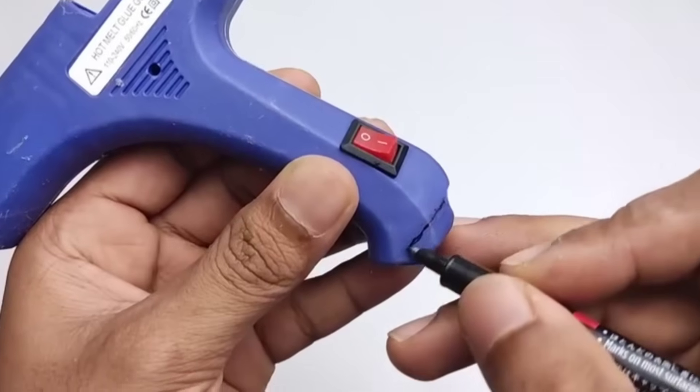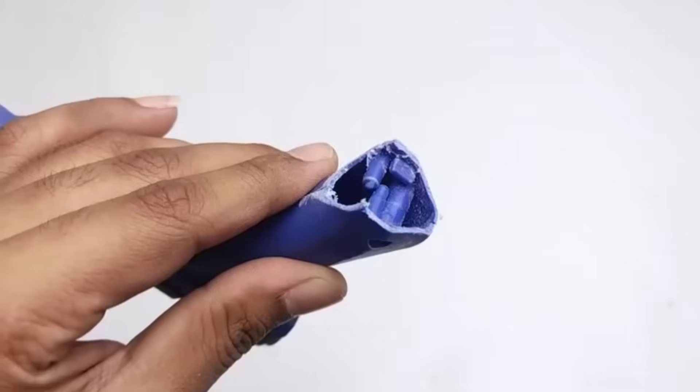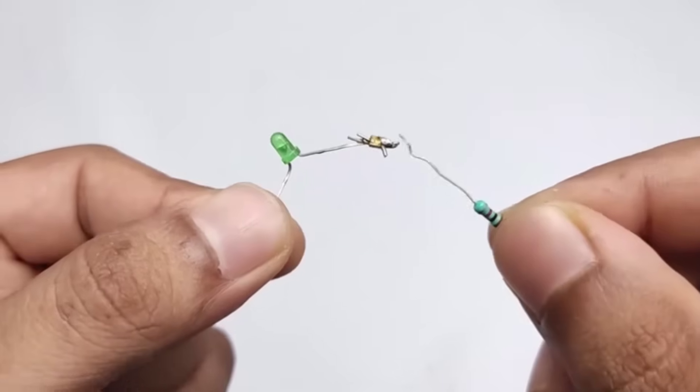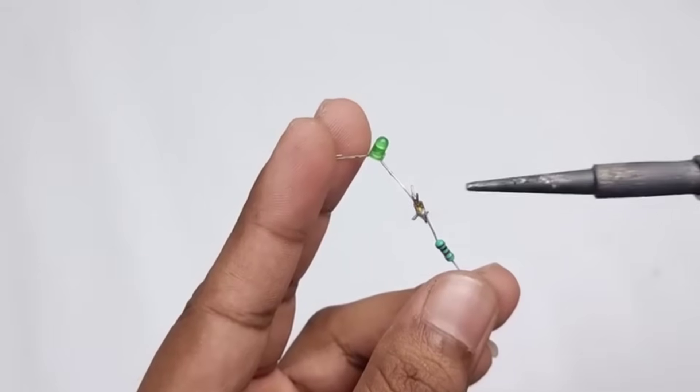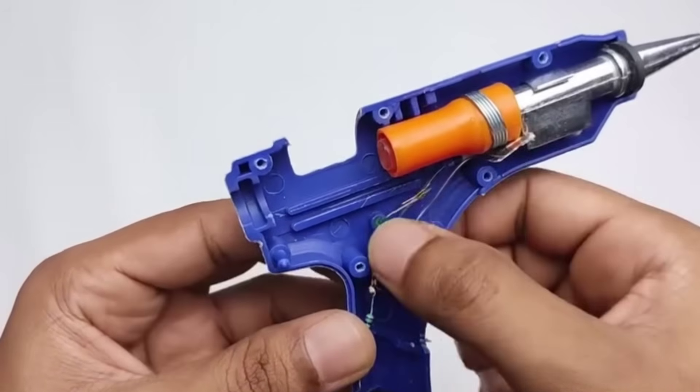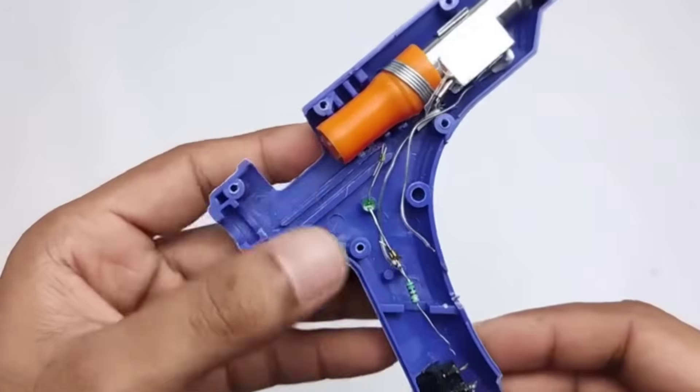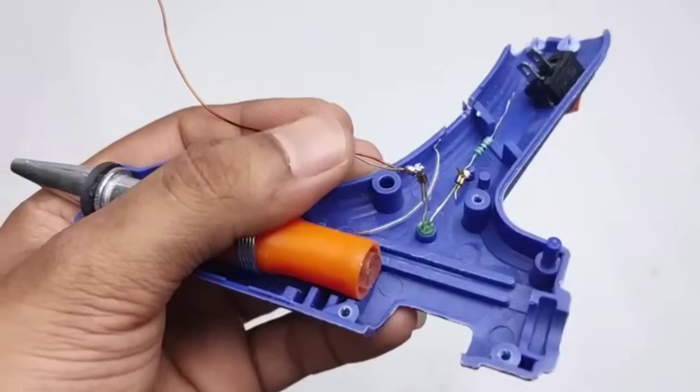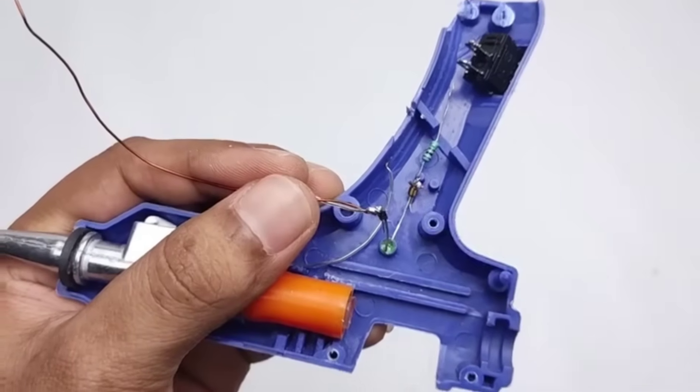So friends, we first mark the area with a marker and then carefully cut it using a saw for precision. We've finished cutting and now it's time to fix the nozzle in place. Next, we need to connect an LED light and a resistor into the circuit. We've connected all the wires and now it's time to join them securely using a soldering iron. There's also a switch which will connect to the wires as well.